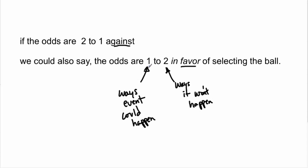If the odds are two to one against, you could also say the odds are one to two in favor. When saying odds in favor, you put the number of ways it could happen first and the number of ways it doesn't happen second. So two to one against means two ways it doesn't happen and one it does; one to two in favor means one way it happens and two it doesn't.